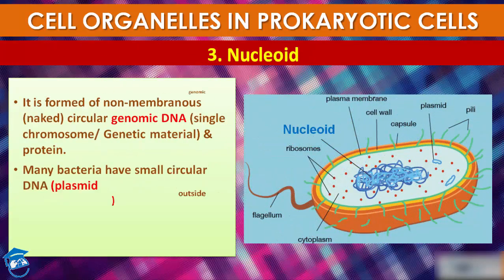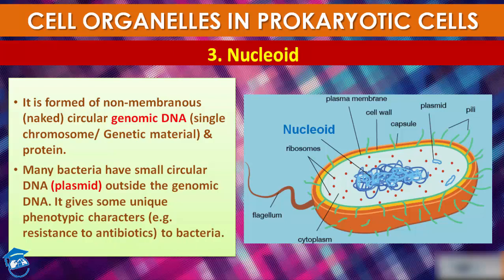Now comes nucleoid. The nucleoid is formed of non-membranous, naked circular genomic DNA and protein. Many bacteria also have smaller circular DNA — called plasmid — outside the genomic DNA. Plasmid is extrachromosomal DNA and it gives some unique phenotypic characters, such as resistance to certain antibiotics, to bacteria.